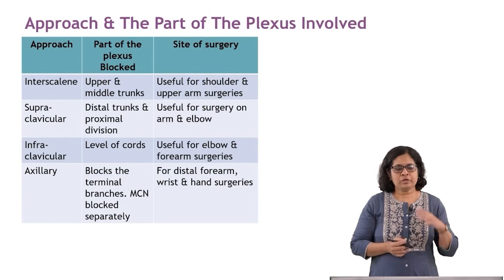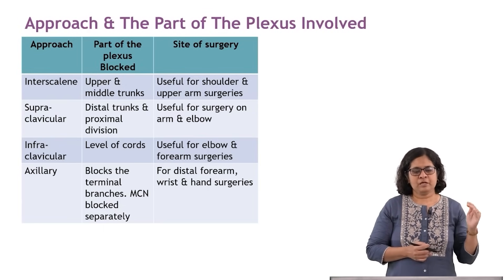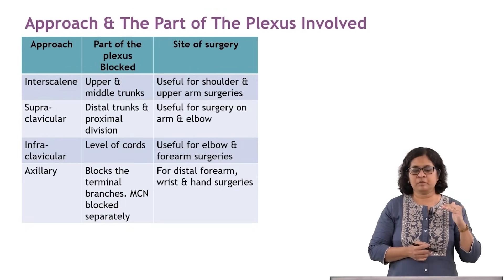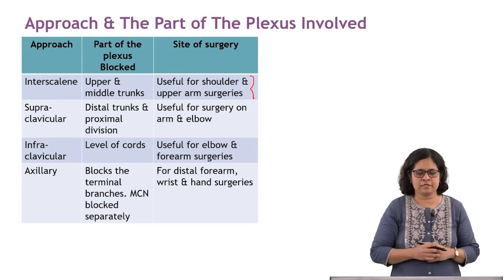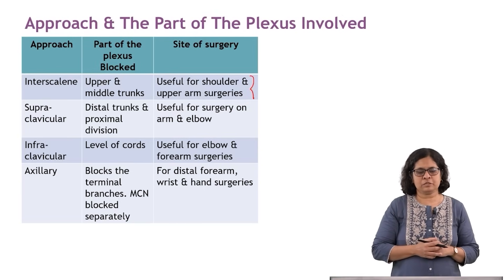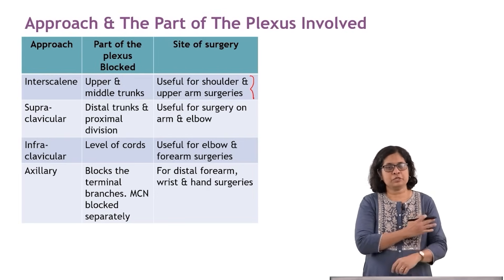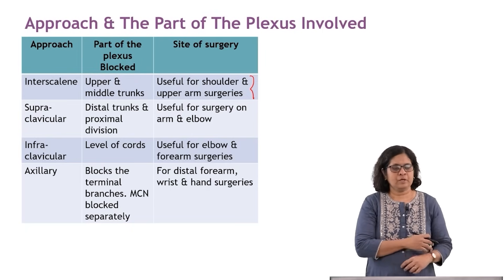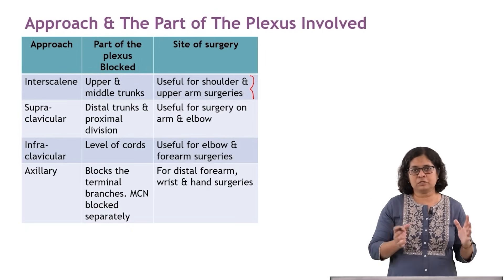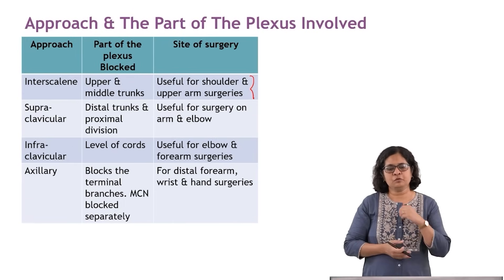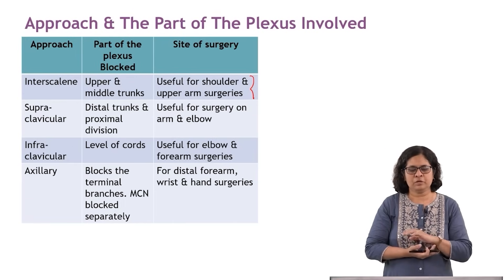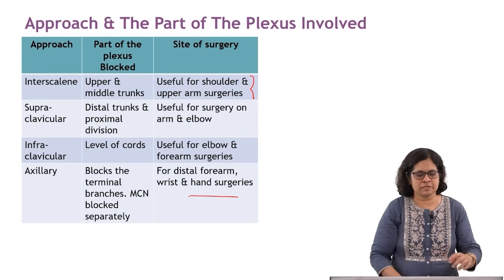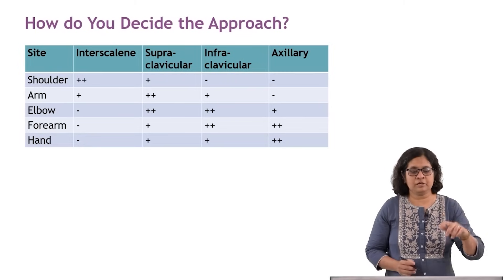The interscalene block blocks the upper and middle trunks and is useful for shoulder and upper arm surgery. The supraclavicular block blocks the distal trunks and proximal divisions, useful for arm and elbow surgery. The infraclavicular block blocks the cords, useful for elbow and forearm surgery. The axillary block is used for distal forearm, wrist, and hand surgery.